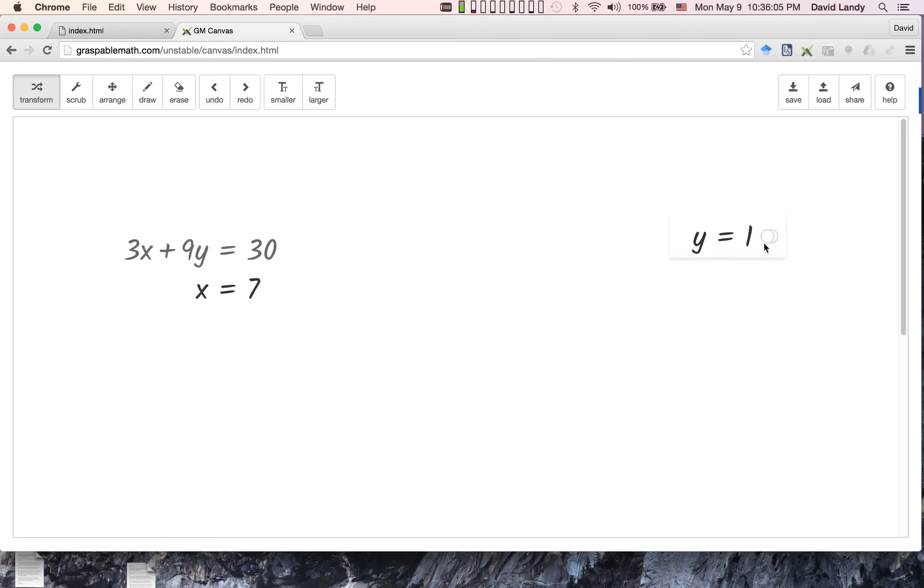And that's the solution to our original equation. If we want to, we could grab either one of those, just make a nice little fresh copy of it, substitute in our values and check our work. But to point it out, that's a little less necessary than it is in other kinds of contexts, since Graspable Math will not let us make most kinds of algebra errors.